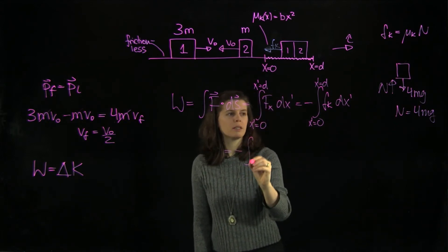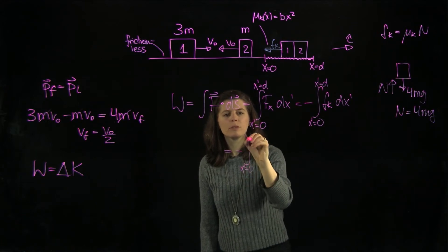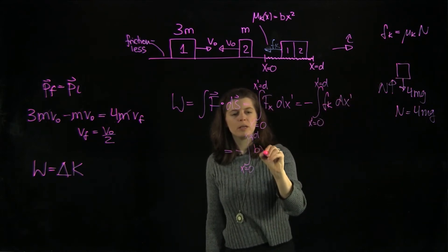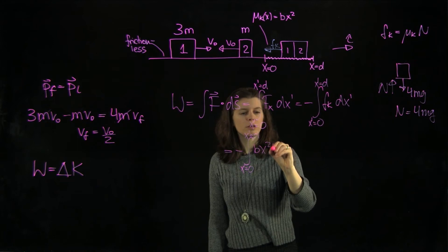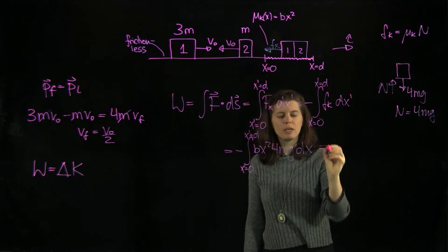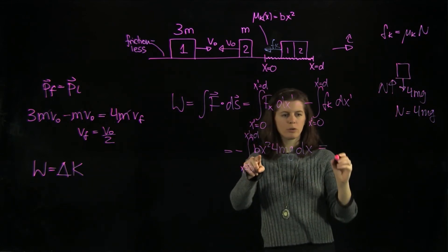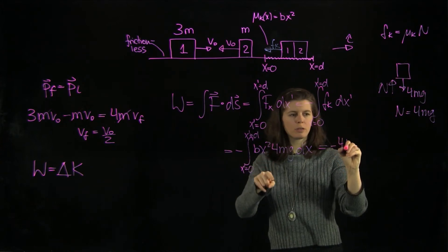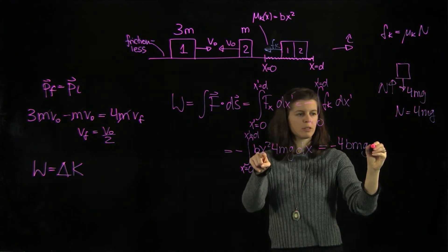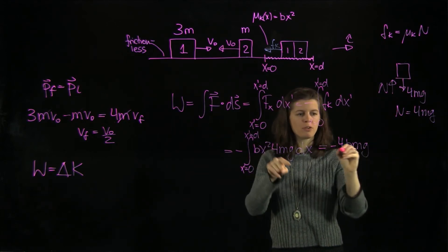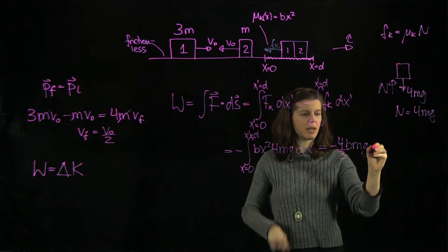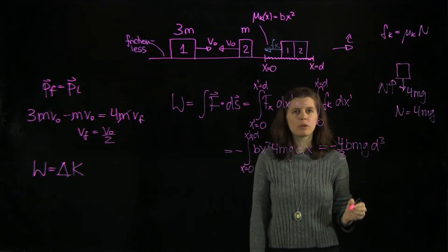So we have minus the integral from x' equals 0 to x' equals d of bx²·4mg dx. Integrating that gives minus 4bmg times x cubed over 3, evaluated from 0 to d. Plugging in d, the lower limit drops away, and we are left with minus 4bmg·d³ over 3. This is our work.